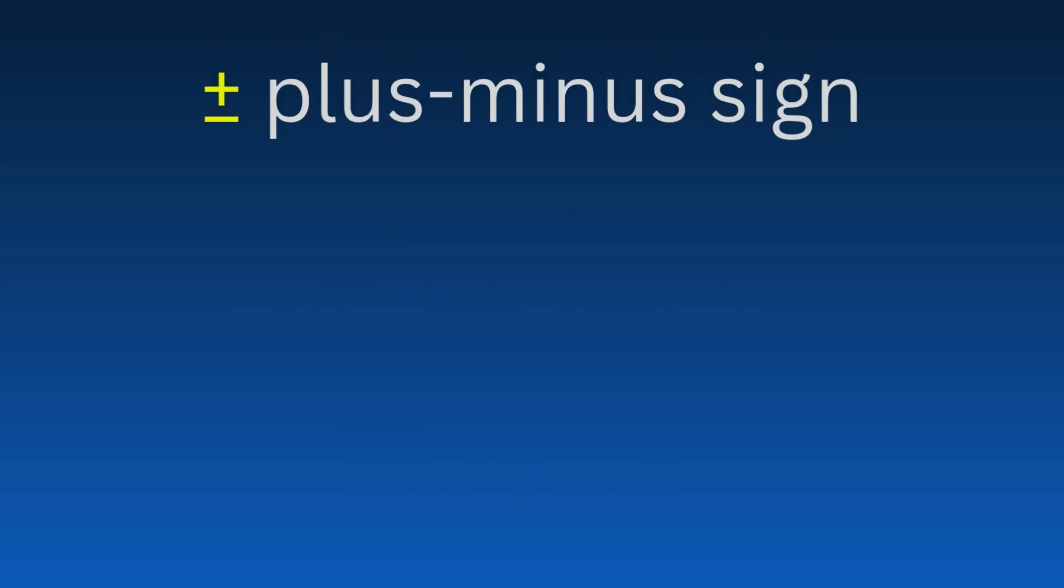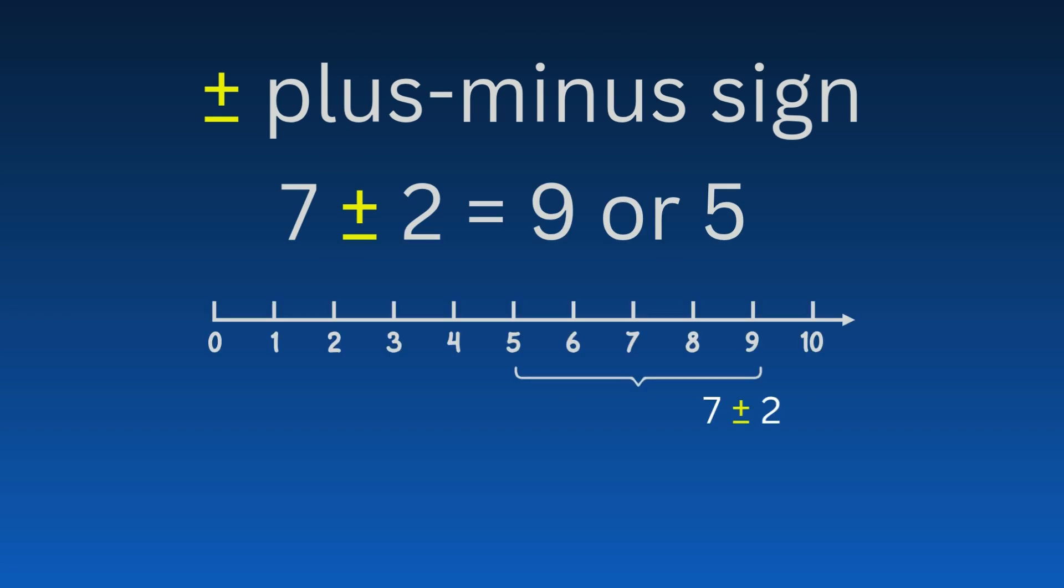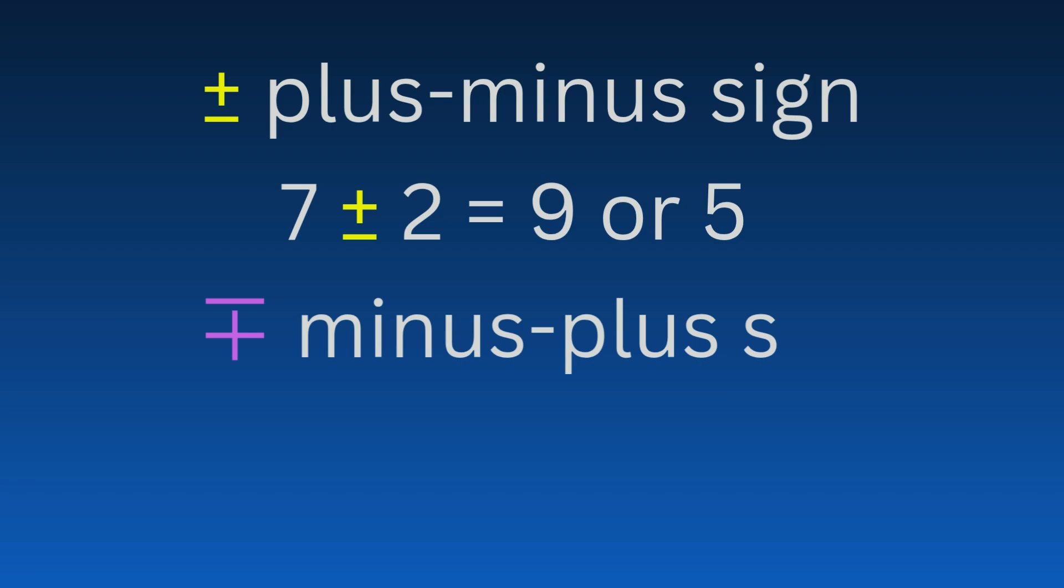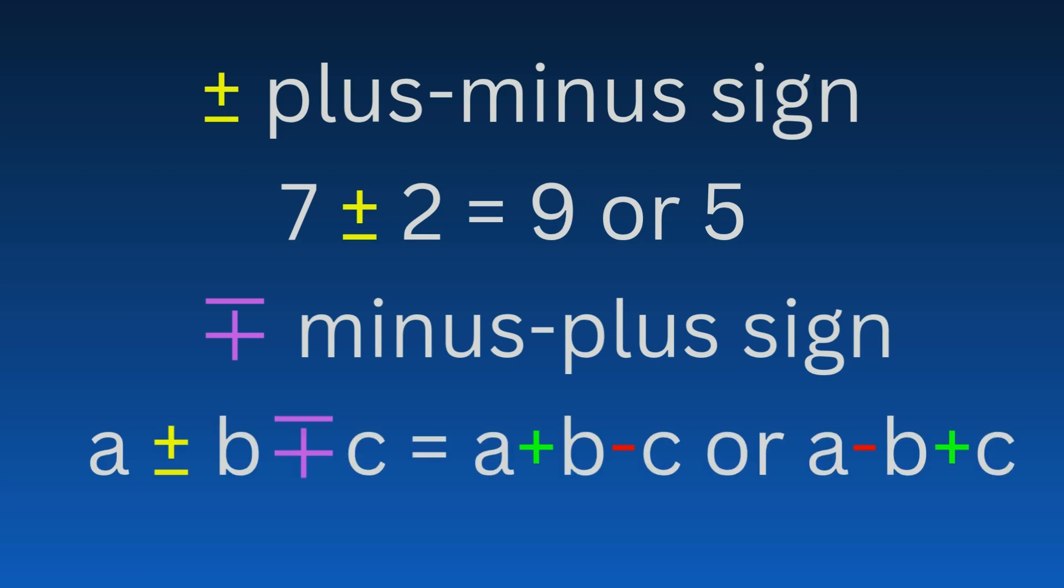The plus minus sign means either plus or minus. It's often used to indicate a range of values. Its counterpart, the minus plus sign, is used alongside the plus minus to show the opposite combination of signs. For instance, the expression could mean a plus b minus c or a minus b plus c. Both signs can't be the same at once.